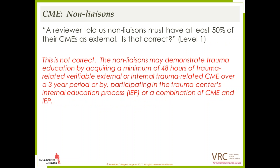CME for non-liaisons: a reviewer told us non-liaisons must have at least 50% of their CMEs as external. Is that correct? That is not incorrect, but it's not a threshold — it's an option. Non-liaisons may demonstrate trauma education by acquiring a minimum of 48 hours of trauma-related verifiable external or internal CME over three years, by participating in the trauma center's internal education process, or through a combination of CME and IEP. If you want to do 50% external and the remainder internal CME or IEP, that is perfectly acceptable for non-liaisons.